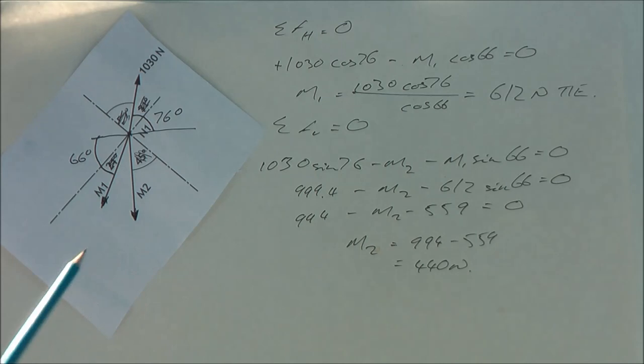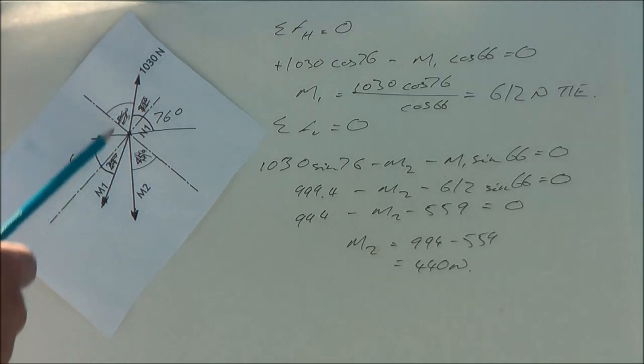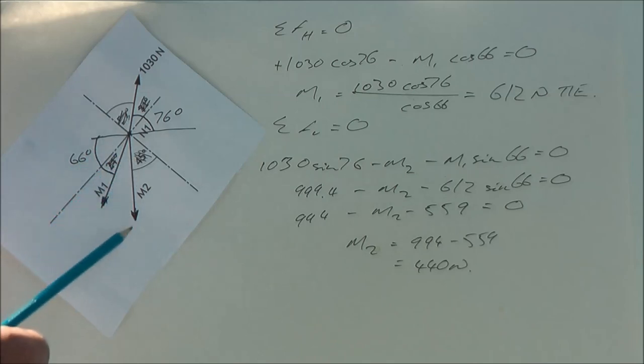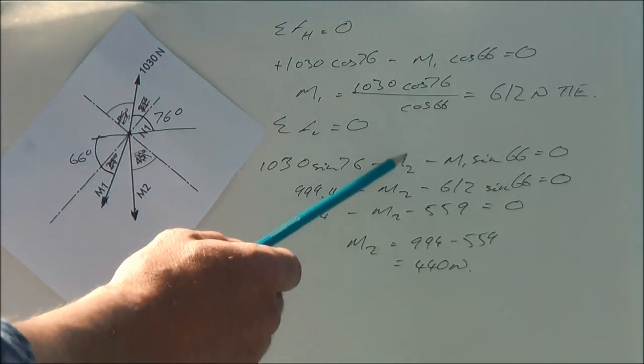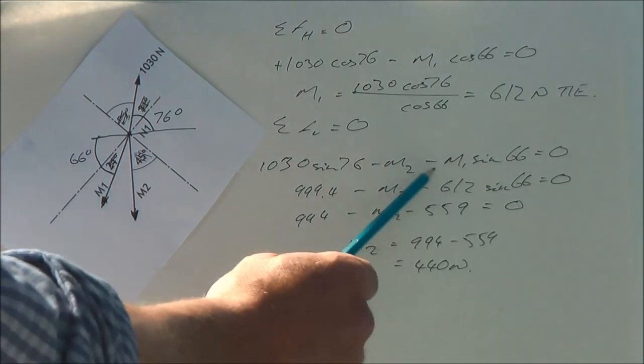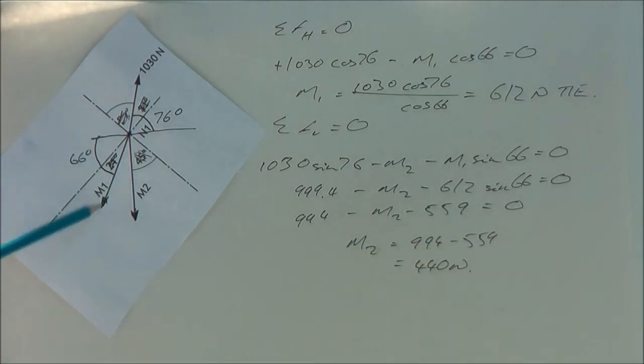The sum of the forces in the vertical. So I've got 1030 sin 76 minus M2. Now M2, of course, is in the vertical, so there's no sine or cosine stuck on the end of it. Minus M1 sin 66, the vertical component of M1.